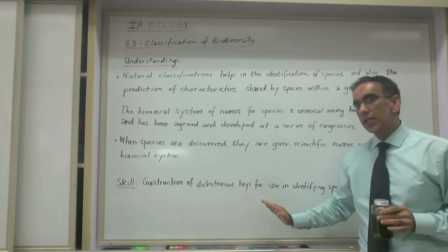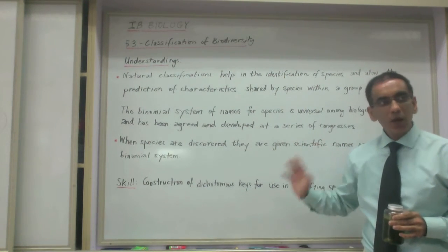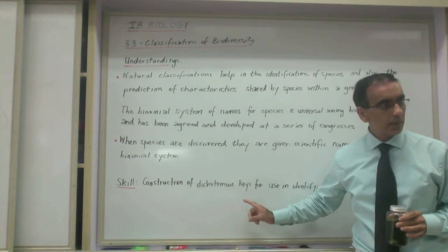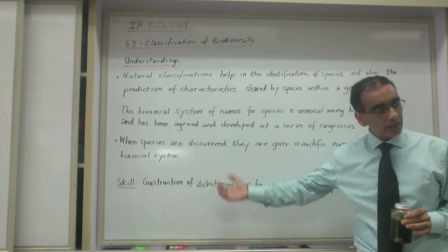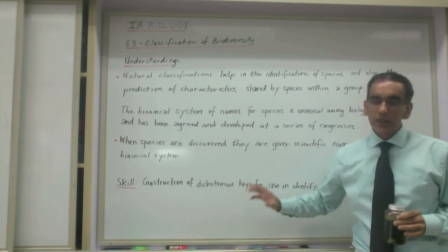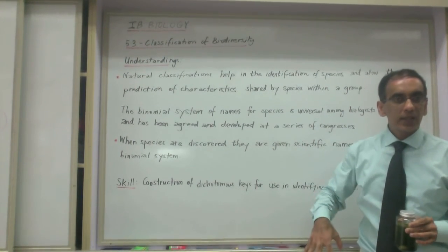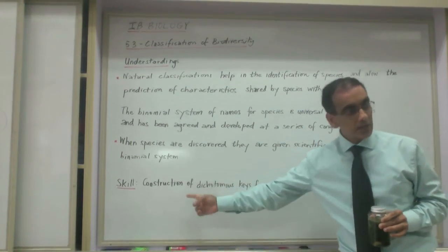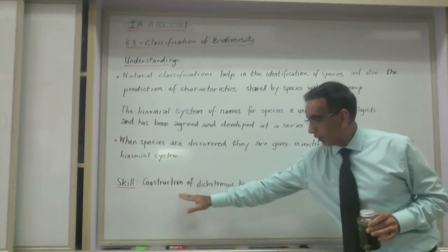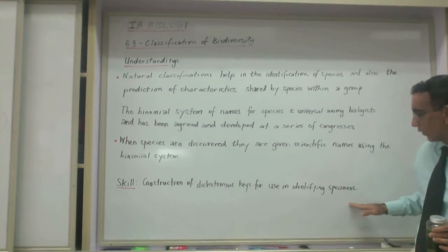And using the algae key as a model, then I want you to stop at the point on the video where it says stop. And don't go beyond because you'll get the answer and it will spoil your fun. So you'll stop at that point. You try to build your key. And we'll be doing that next class. So that's how we're going to focus on this skill of constructing a dichotomous key for identifying specimens.